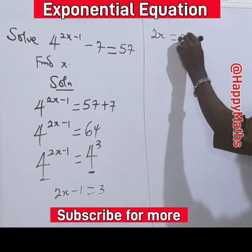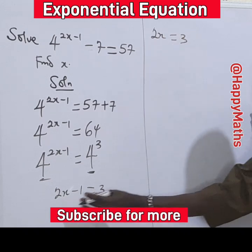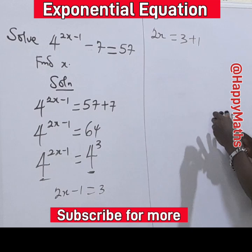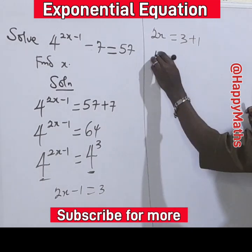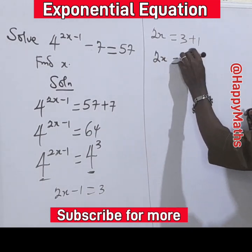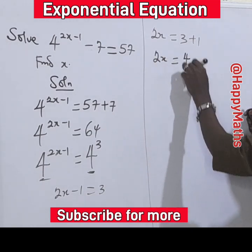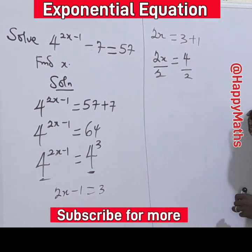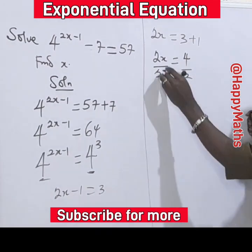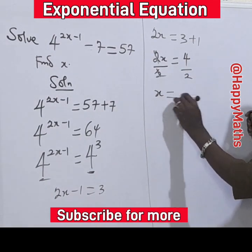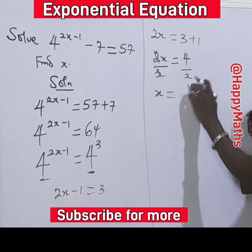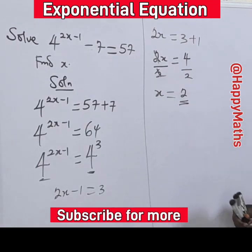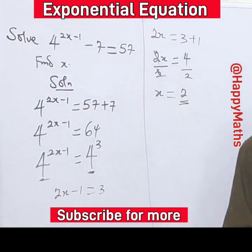From here, we transpose the 1 to get 2s equals 3 plus 1, which is 4. Dividing both sides by 2, we get s equals 4 divided by 2, so s equals 2. Subscribe and follow us for more — that is the answer.